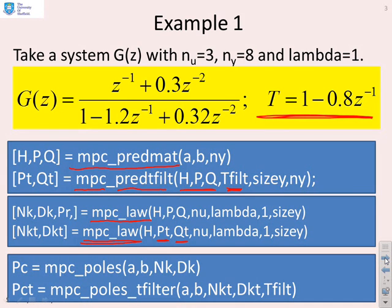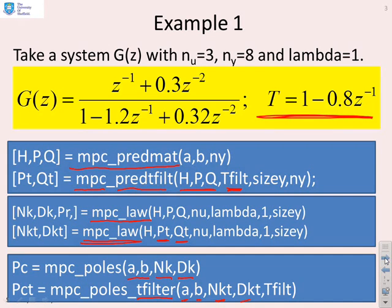Finally, if you want to find the closed-loop poles you can use PC and PCT, which come from putting in A, B, NK, and DK — your model parameters and your controller parameters. Similarly, there's a file MPC_poles_T-filter because the closed-loop pole polynomial calculation is slightly more complex, and you now need AB, NKT, DKT, and also T-filter.